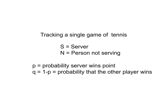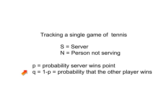In this discussion we're going to look at a single game of tennis being played by two people: the server and the other person not serving. In tennis, usually the server has an advantage, at least if that person has a good serve. P is the probability the server wins any given point, and Q, which is one minus P, is the probability the other player wins. Generally, if the two players are relatively equal in ability, P will be higher than Q because of the advantage that the server has.